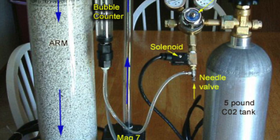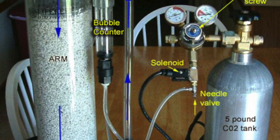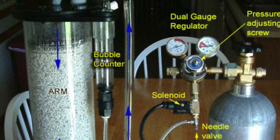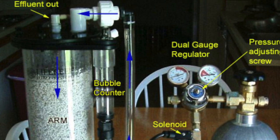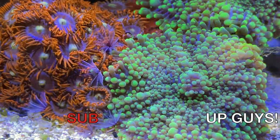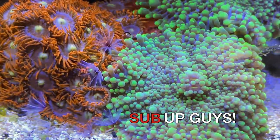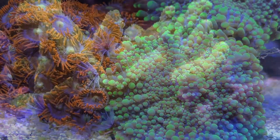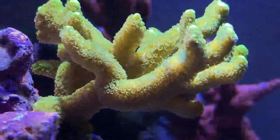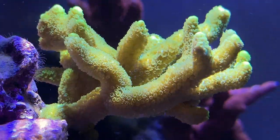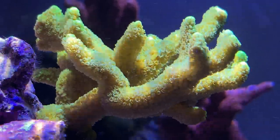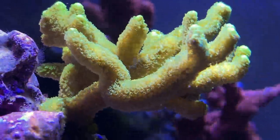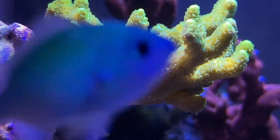Another means of supplementing calcium and alkalinity is through a calcium reactor. Reef keepers who need a calcium reactor are usually keeping an SPS-dominated tank, which requires large volumes of calcium and alkalinity to be added. I'll see you next time.